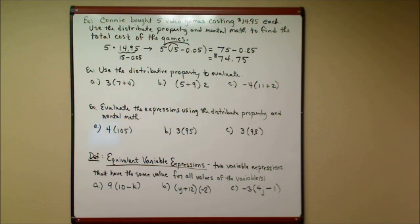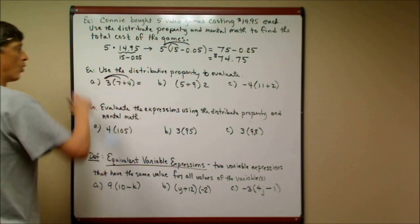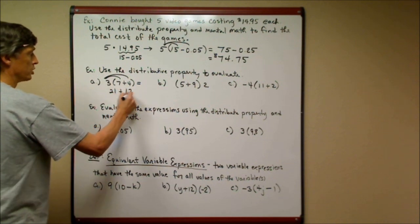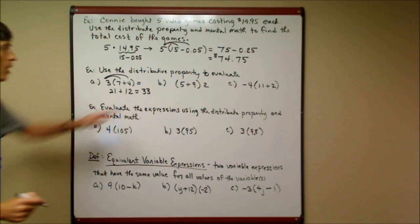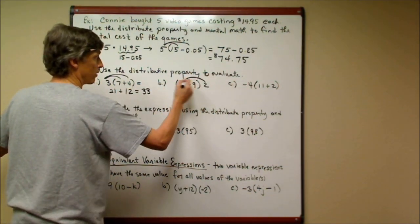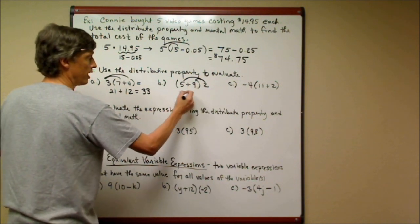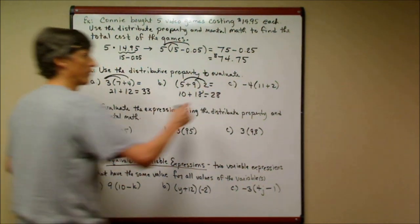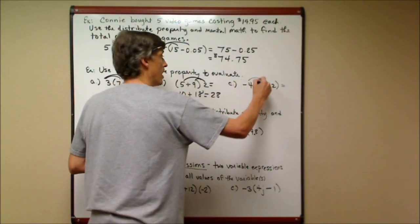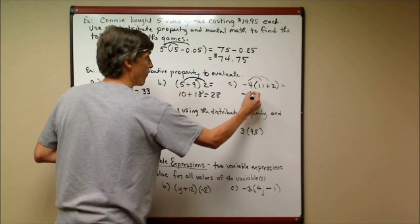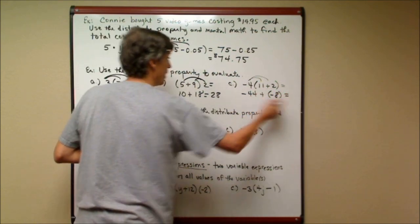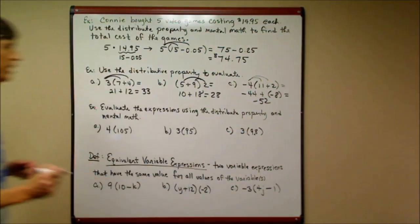Now use the distributive property to evaluate — you must show the distributing step. Three times (7 + 4): three times seven is twenty-one, plus three times four is twelve, giving thirty-three. Next: five times (2 + 9) — nine times two is eighteen, ten plus eighteen is twenty-eight. For negatives: negative four times (11 + 2) — negative four times eleven is negative forty-four, plus negative four times two is negative eight. Adding two negatives, I get negative fifty-two.